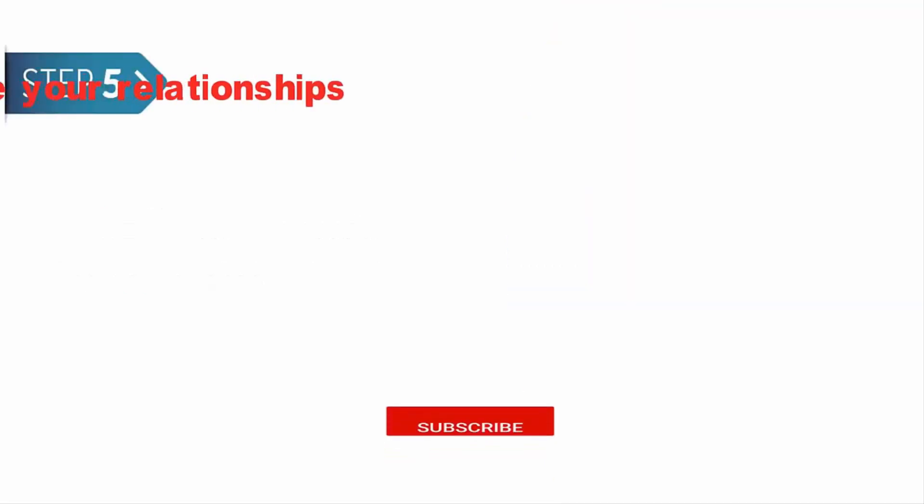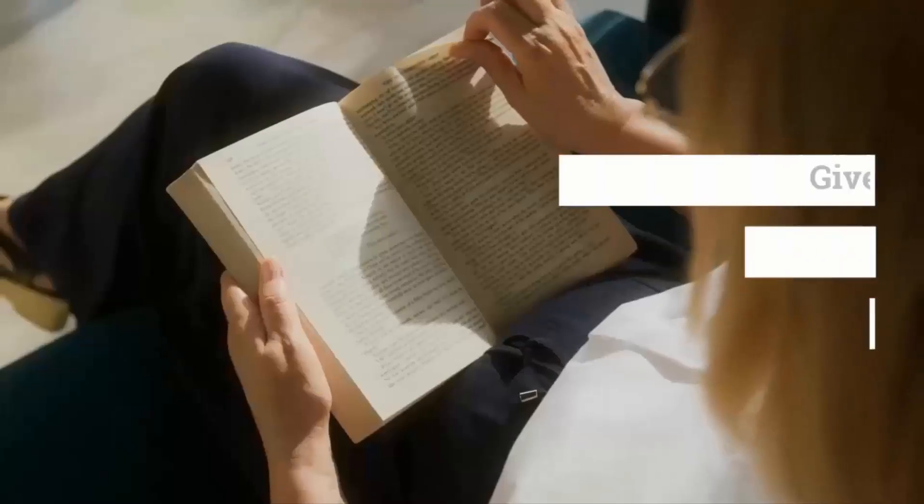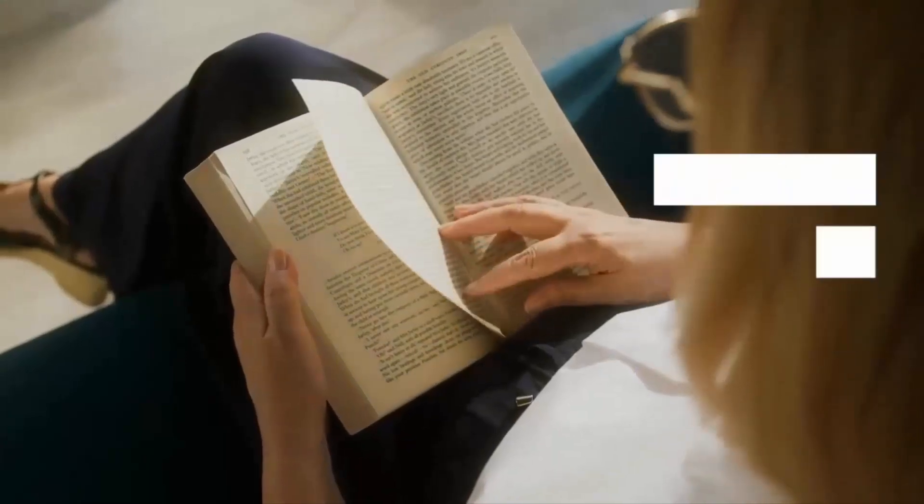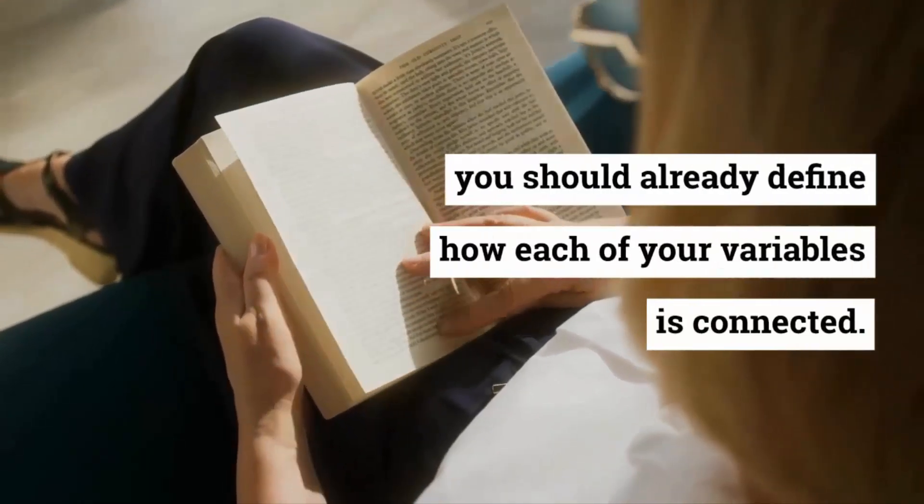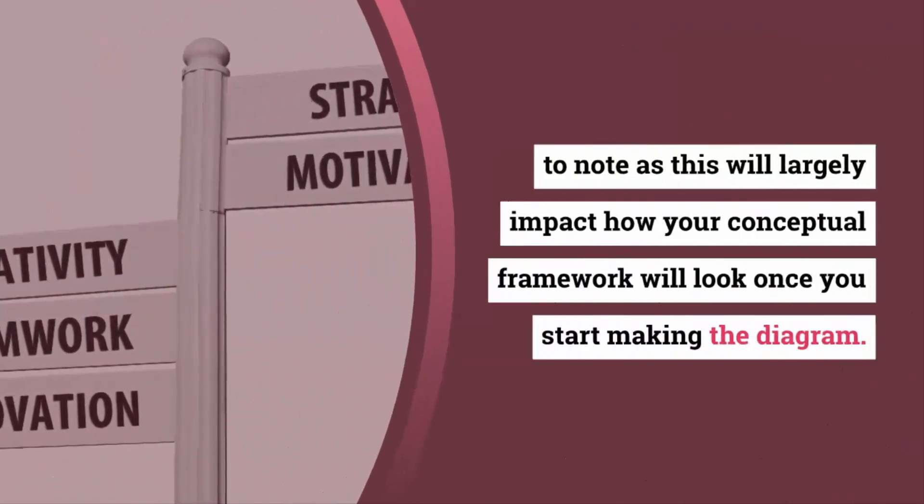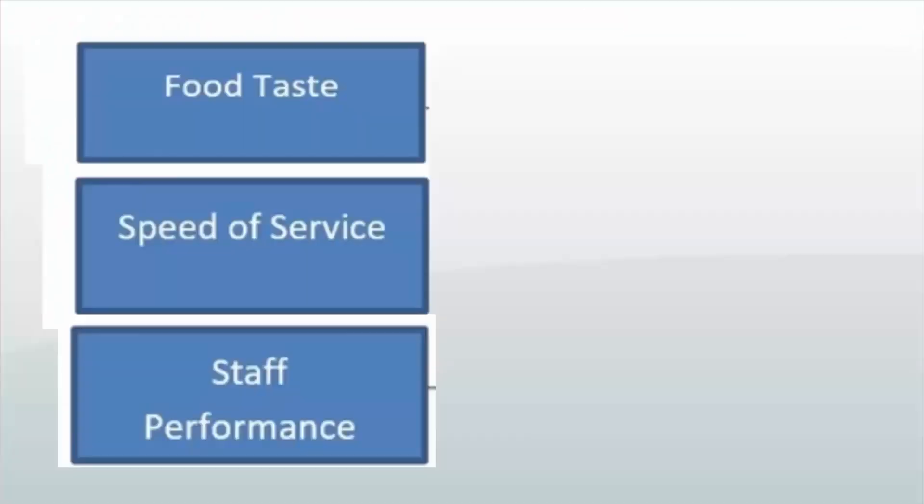Step 5: Choose your relationships. Now that you have chosen your variables, you have to decide how these variables are related to one another. Given that you have already read much literature on your topic, you should already define how each of your variables is connected. This is especially important to note as this will largely impact how your conceptual framework will look once you start making the diagram.